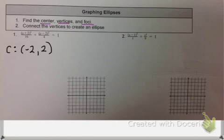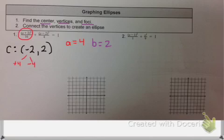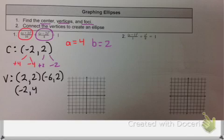I need to find my a and b values. I know that a is 4 and b is 2. Since my a value came from underneath my x, I'm going to add and subtract it from the x value of my center. Since my b value came from the y, I'm going to add and subtract it from the y value. So my vertices are 2, 2 and negative 6, 2 and negative 2, 4 and negative 2, 0.